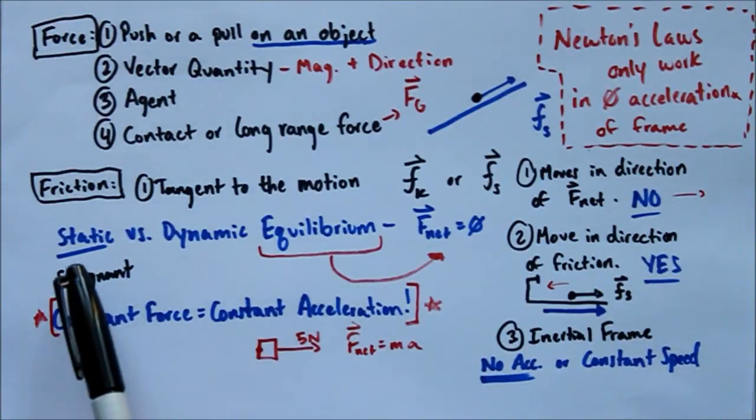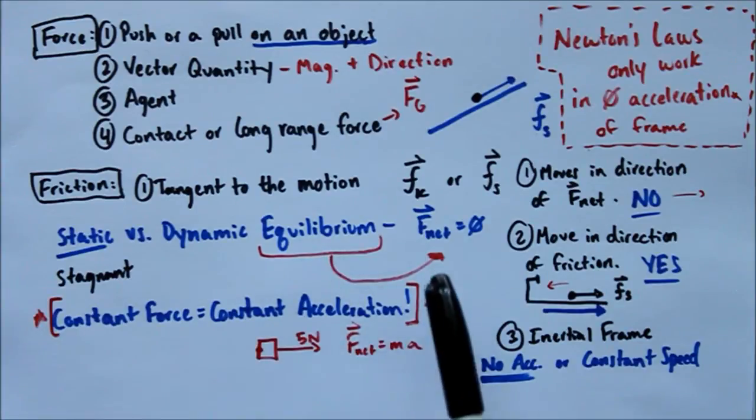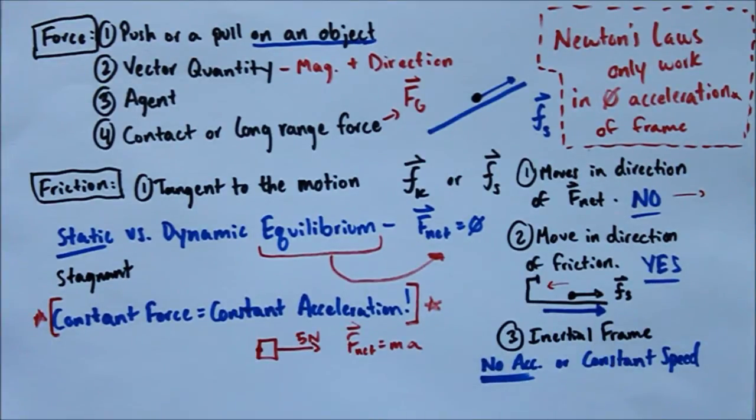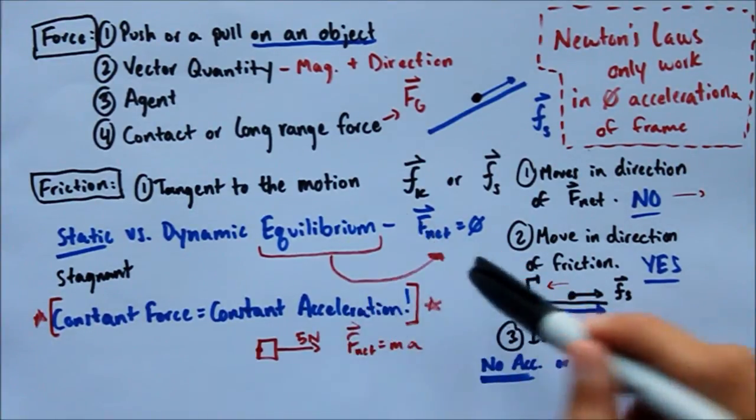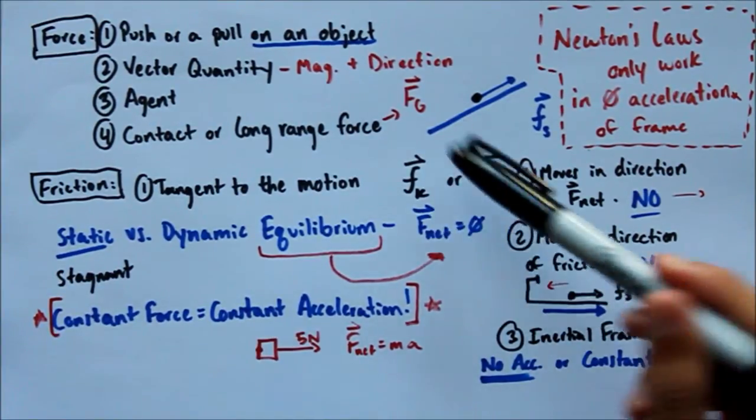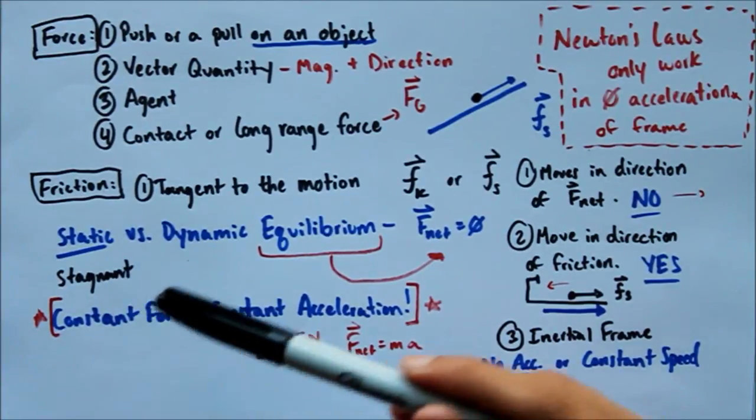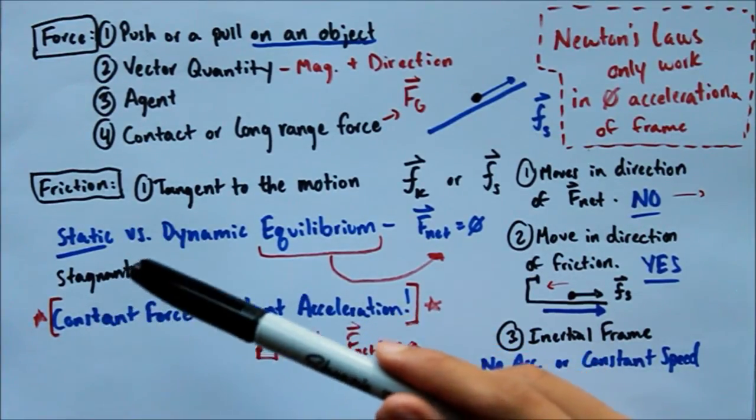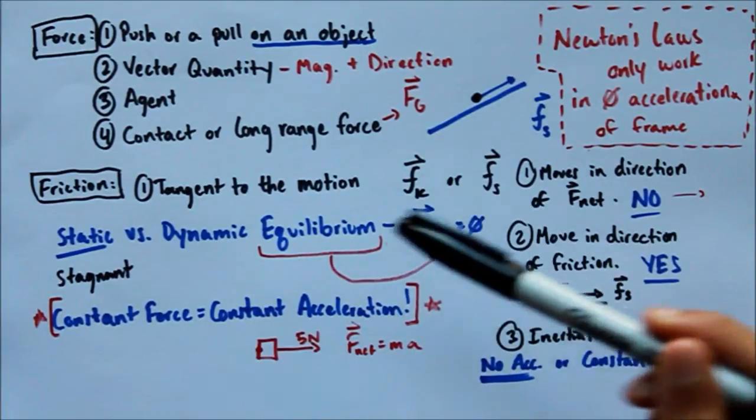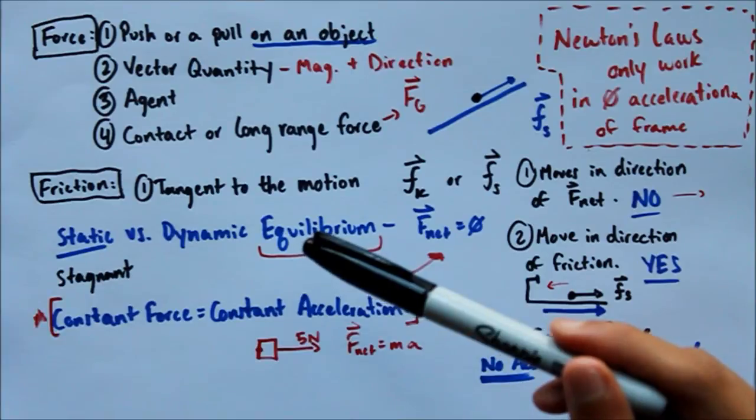Then we get into this notion of static versus dynamic equilibrium. And first, we have to define equilibrium. So what is equilibrium? To us, equilibrium is just basically where the net force is going to equal zero. So the sum of all forces is going to be zero. And this could be two types. So static, which I like to remember as stagnant because they share the first three letters, where you're just sitting in one place, not moving at all, net force of zero. So you're not changing, you're not accelerating, you're just sitting there, static.